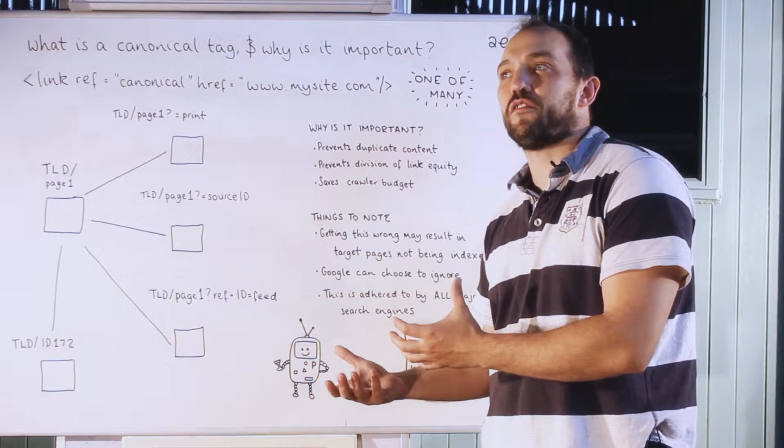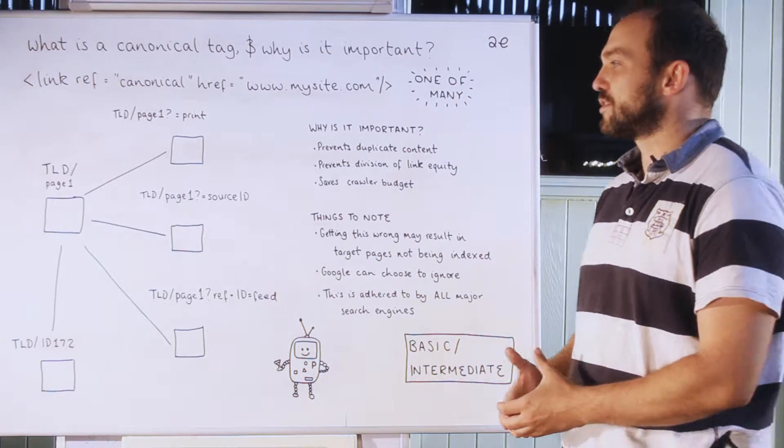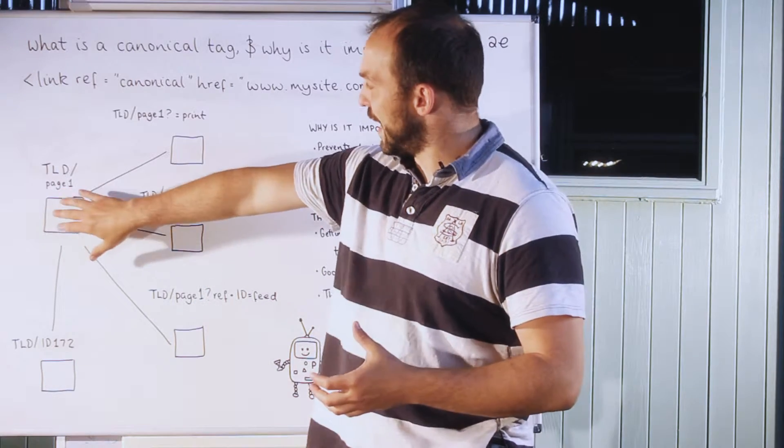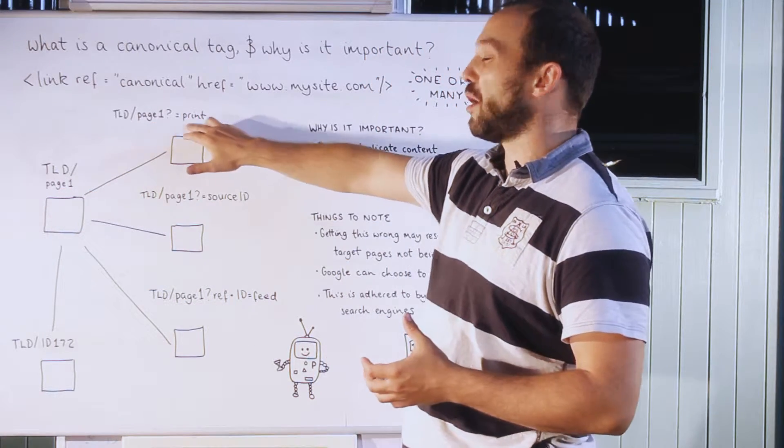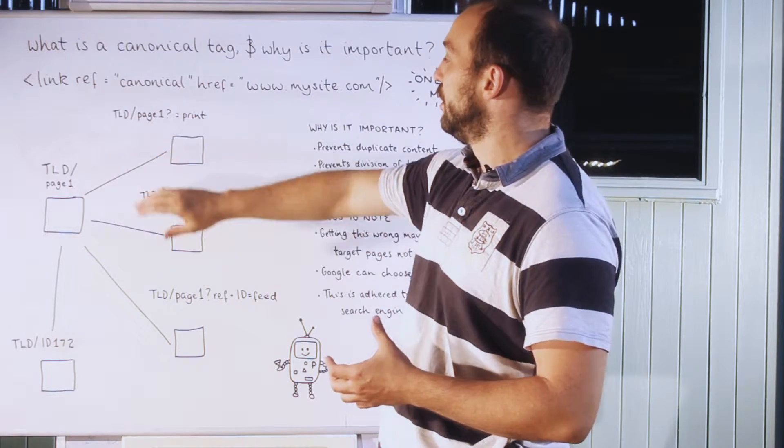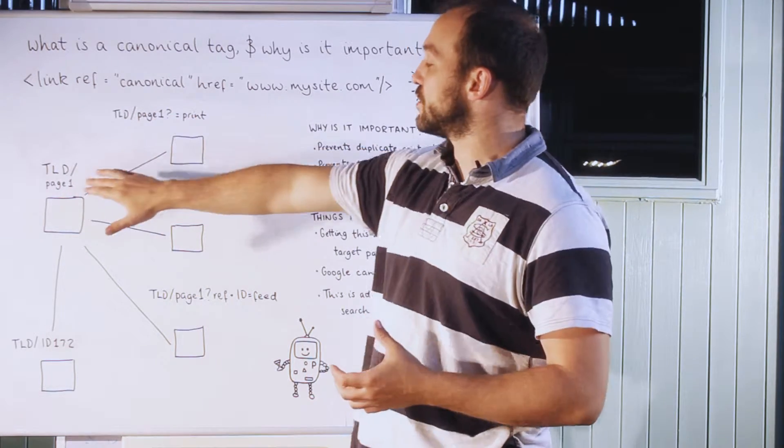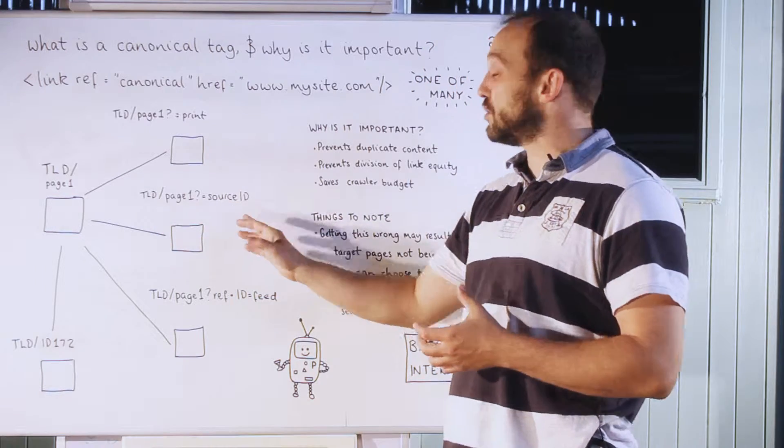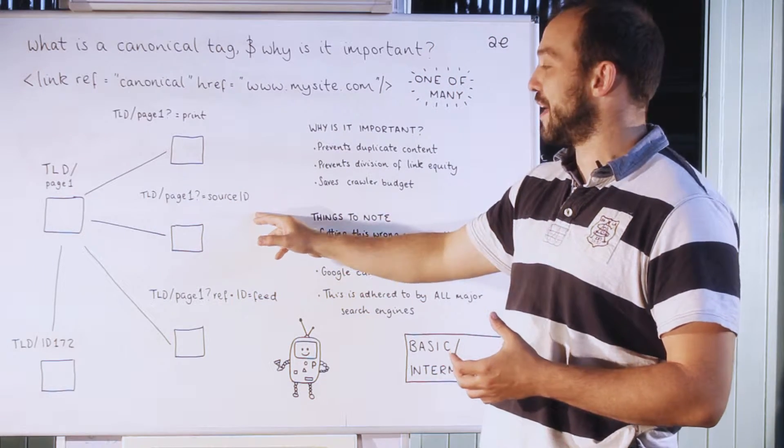For instance, we may have this page one here. It may then be duplicated because you want a print version which has a parameter which formulates a new URL. Also then suddenly you've got a duplication of that page. It may be duplicate because you've stuck a tracking parameter in there which then creates another duplicate URL.